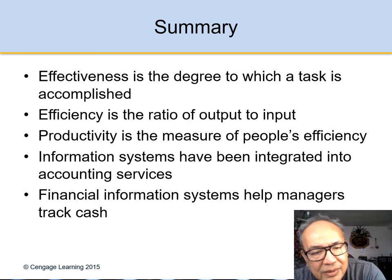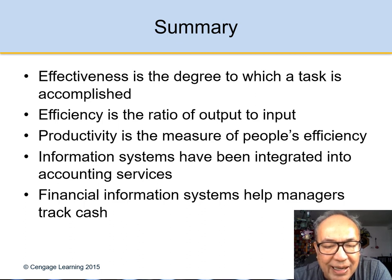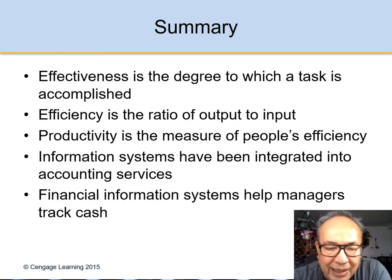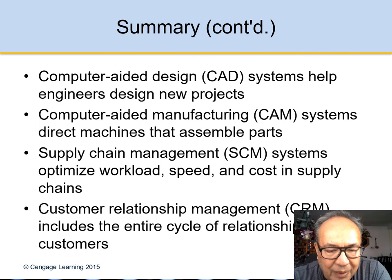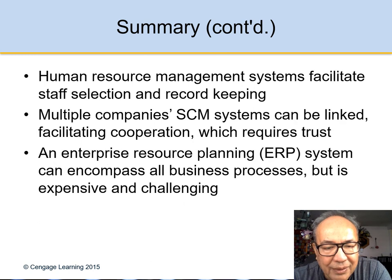Summary: effectiveness is the degree to which a task is accomplished. Efficiency is the ratio of output to input. Productivity is a measure of people's efficiency. Information systems have been integrated into accounting services, financial services, and all the other programs that make us more efficient and effective. These are the functions of business.